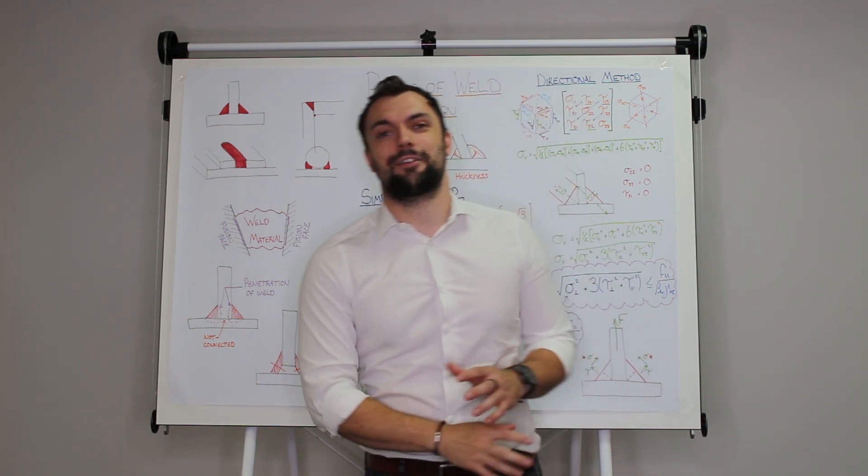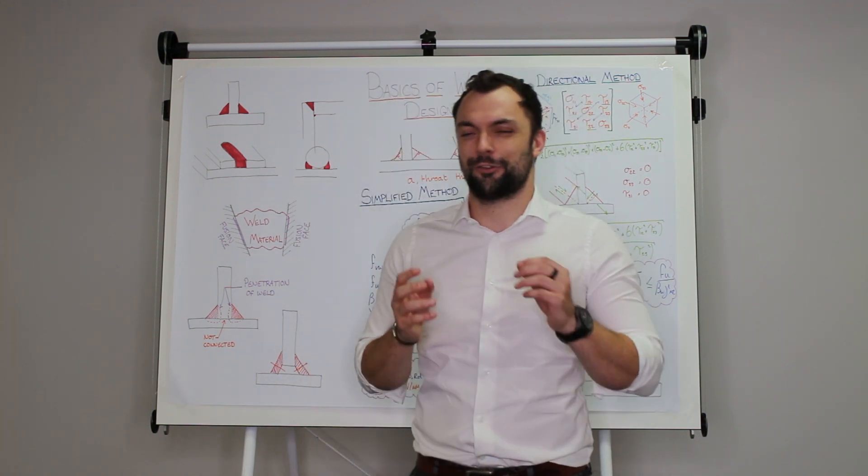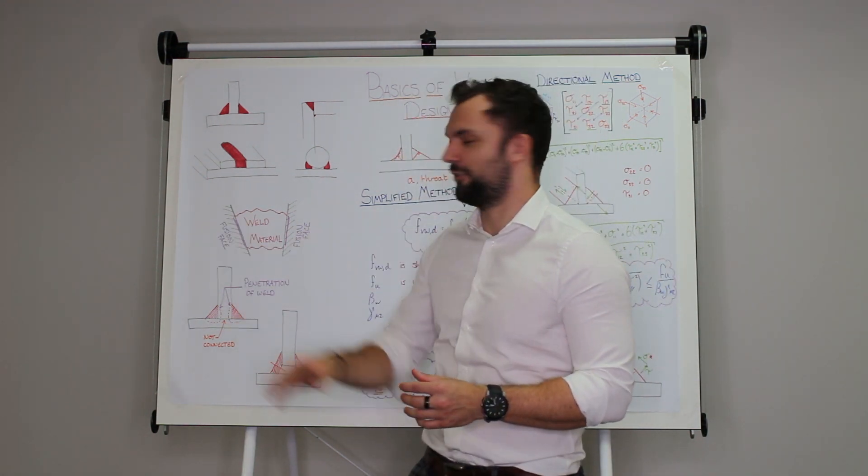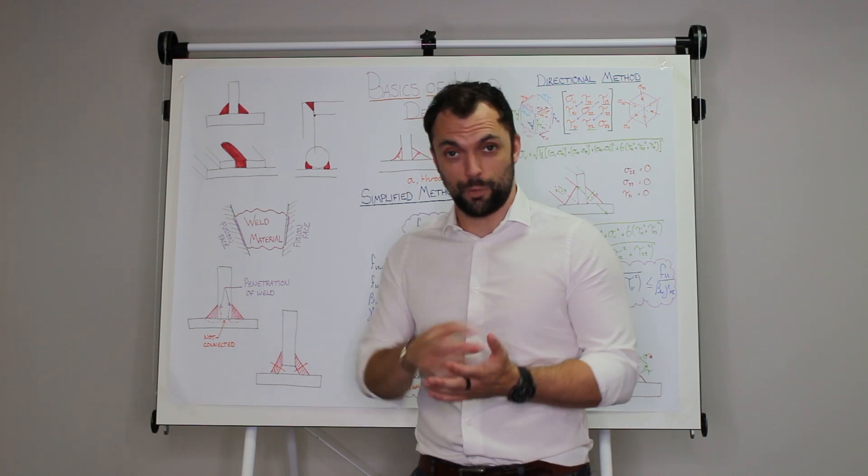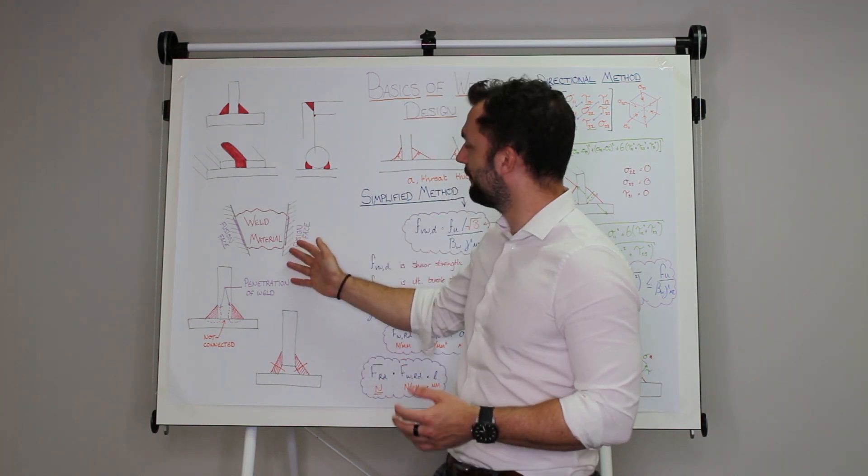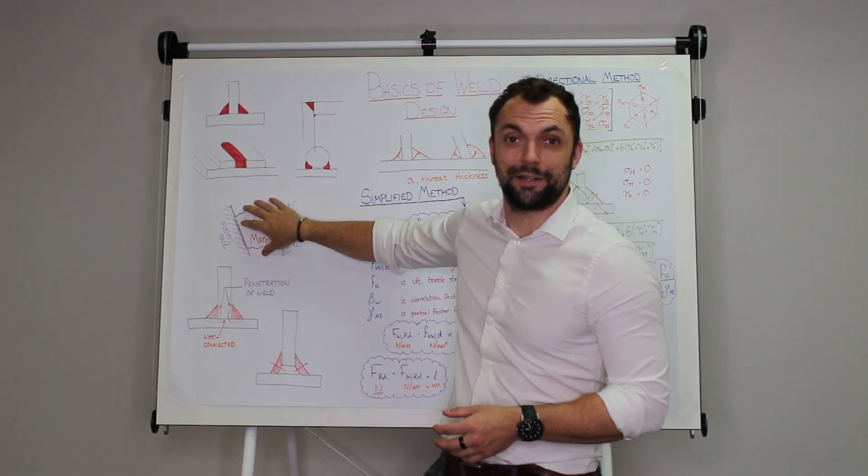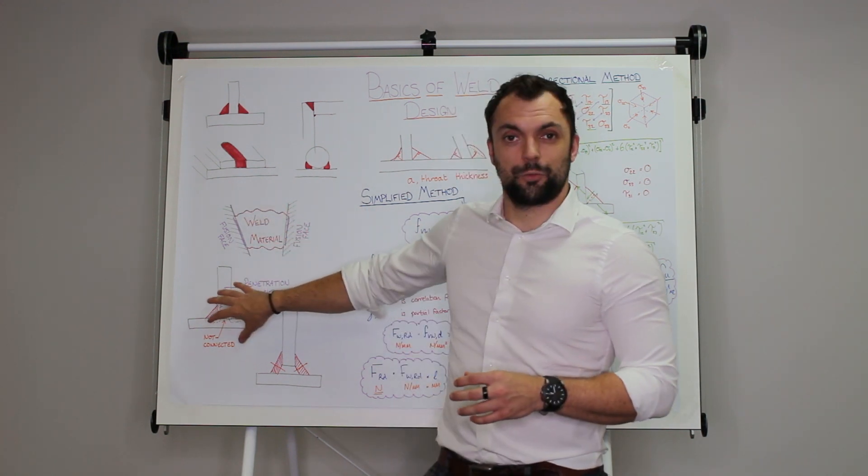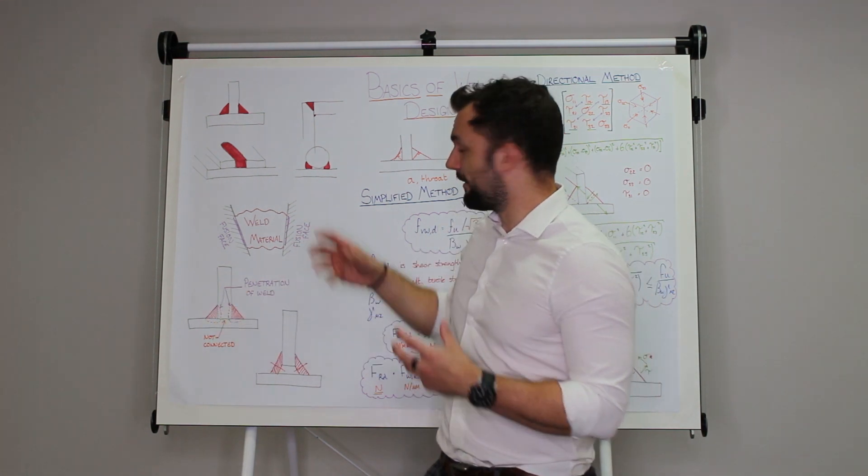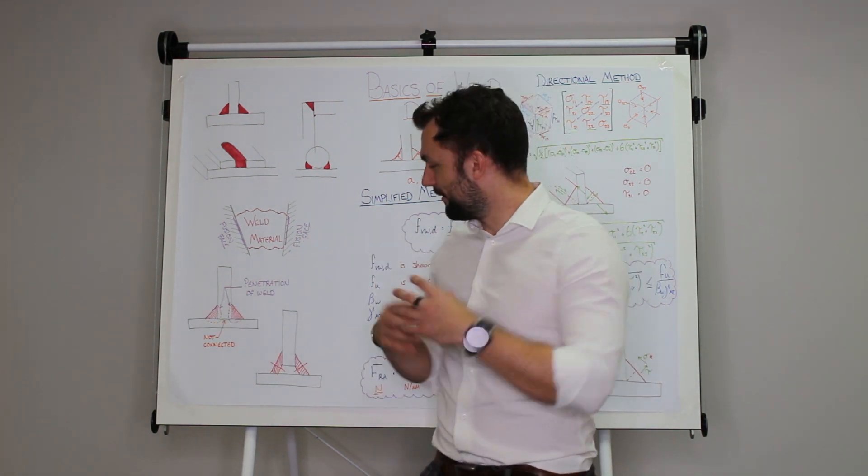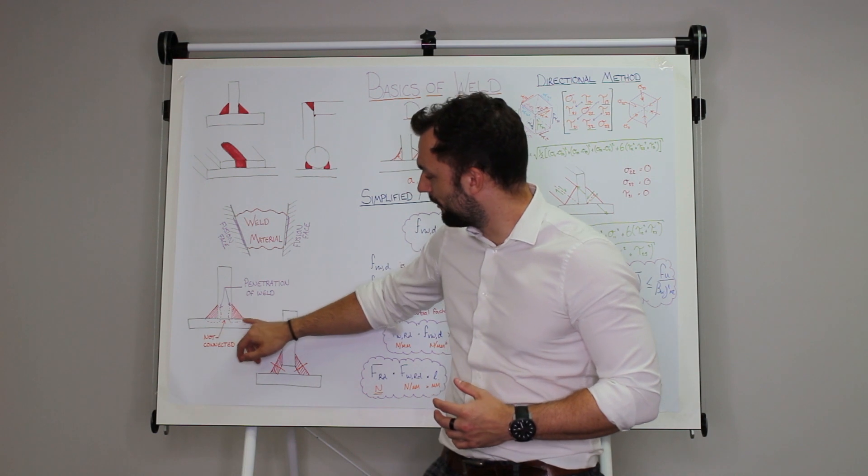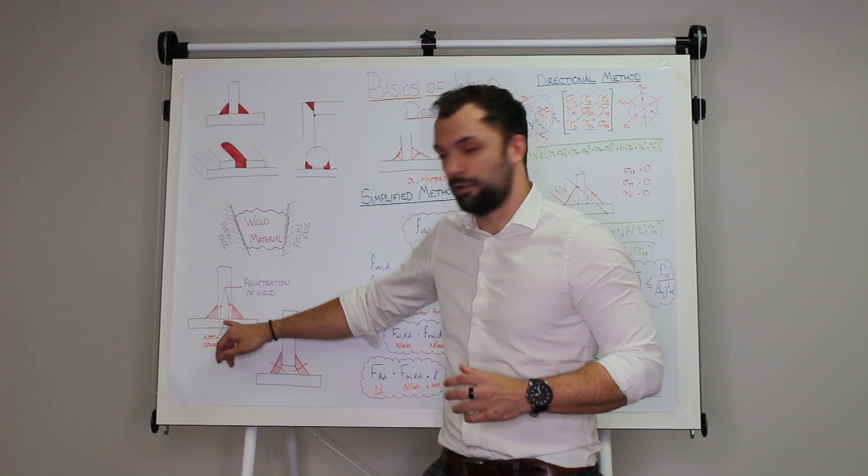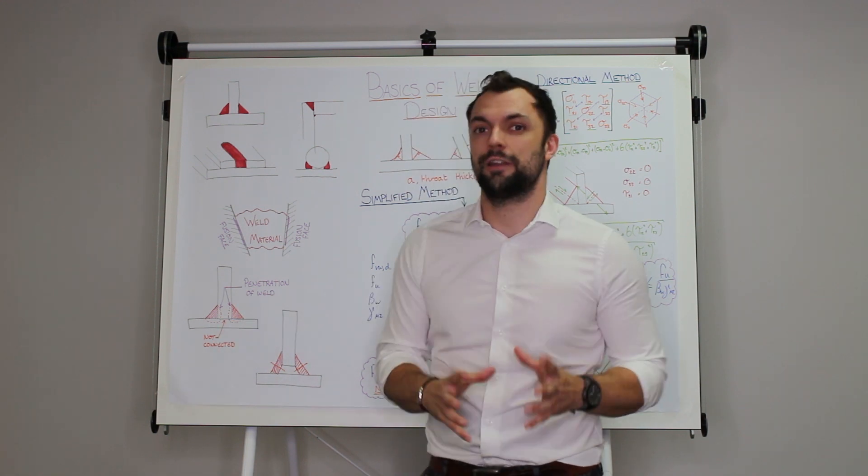But it doesn't really matter what kind of weld you're talking about because all welds have the same basic kind of structure. You have what's called a fusion face which is part of the parent material that you're welding to, and you have another fusion face and you have a blob of weld in between that sticks those two together. Now when the weld mixes with the parent material it's a molten glob of metal that begins to melt in and it mixes with it and it actually penetrates into some of that parent material. But there is still a gap in the middle for instance with a fillet weld that's not connected.